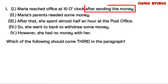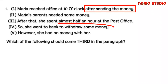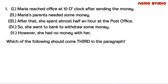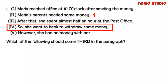But we cannot say Roman numeral I will be our first sentence, since Maria has already sent the money in that sentence. In fact, the rest of the sentences tell us that Maria went first to the bank to withdraw some money. So our first sentence is Roman numeral II. Since her parents needed money, she would go to the bank to withdraw some.